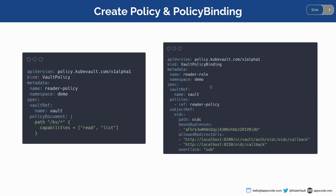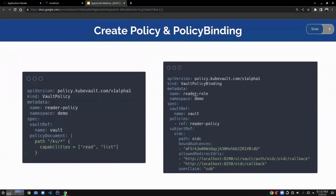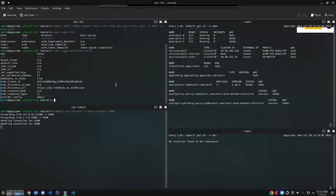In my policy binding I need to provide the policy reference and the path where OIDC has been enabled. The bounded audience is optional — if not provided, it defaults to the client ID. The redirect URLs configured in the vault for the OIDC provider also need to be configured here. The user claim is typically 'sub' for most OIDC providers. Now let's create the vault policy and the vault policy binding.